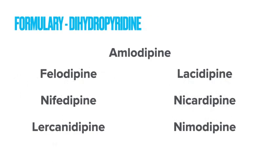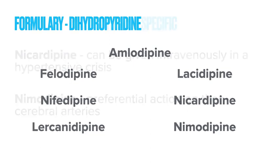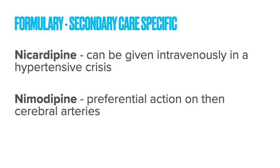The dihydropyridines are a much longer list and there are seven key dihydropyridines available in the BNF at the moment. I'm going to first look at two of them purely because they're not used much in primary care and we can ignore them hereafter. Nicardipine is a very early calcium channel blocker and the main reason it's still used is it's the only calcium channel blocker that can be given intravenously, making it useful in secondary care when managing hypertensive crises.